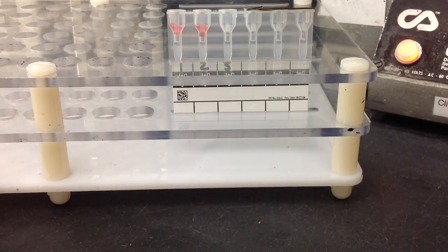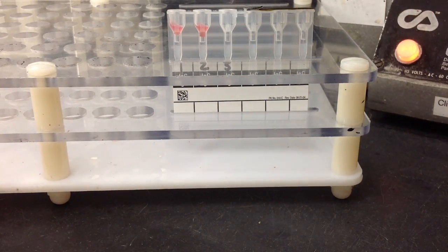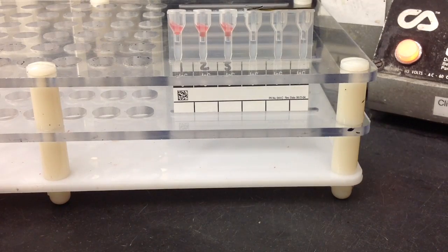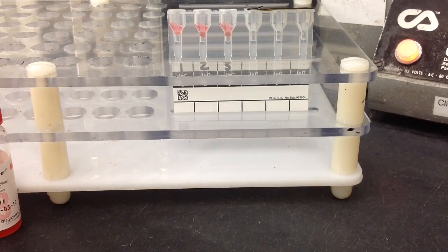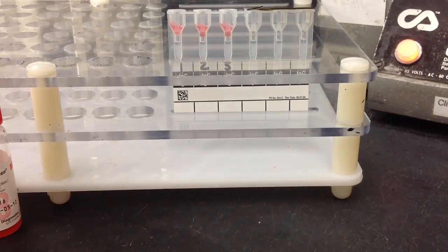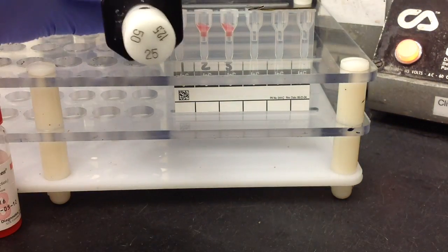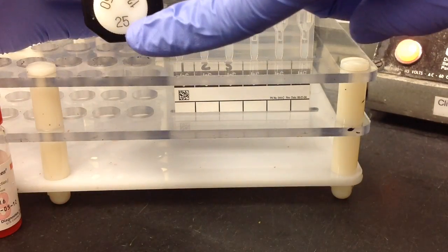After adding your reagent red cells in the upper portions of the reaction chamber, then you can start to move on to the patient specimen, which will be their plasma or serum, and you're going to want to use a 25 microliter pipette for this.